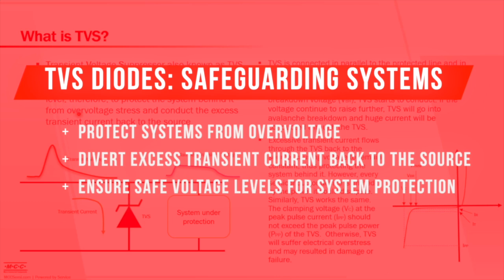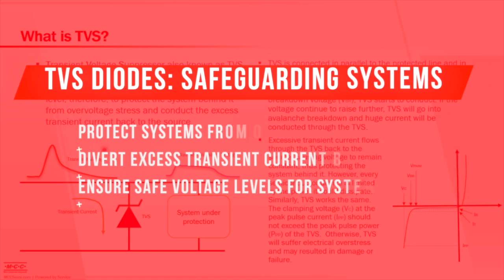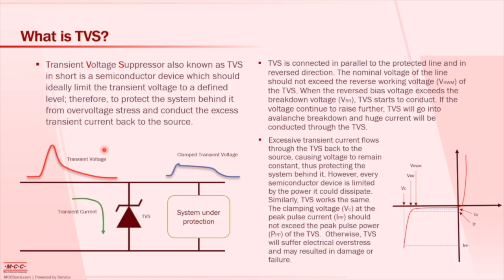In other words, a TVS diode is used to clamp the transient voltage to certain levels which are comfortable for the systems under protection.